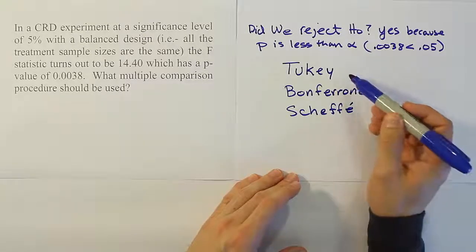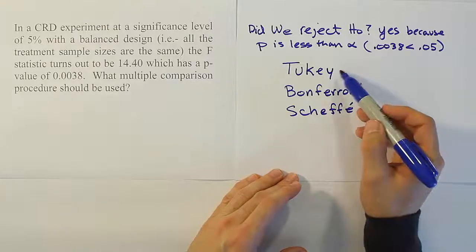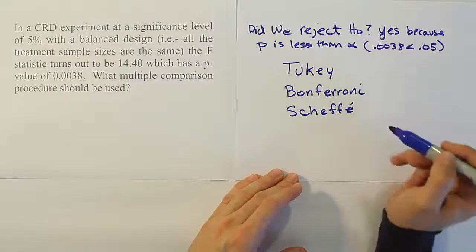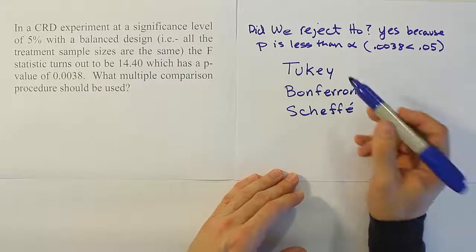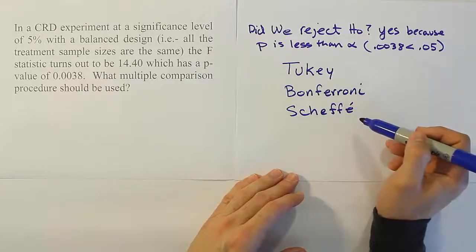It turns out that this is the order in which you should use the methods. In other words, Tukey is the best method if we can use it. If we can't use Tukey, we choose Bonferroni. And if we can't choose Bonferroni, then we go with Scheffé. You might say, why the difference? Why do we want to choose Tukey's over the others, or Bonferroni before Scheffé?